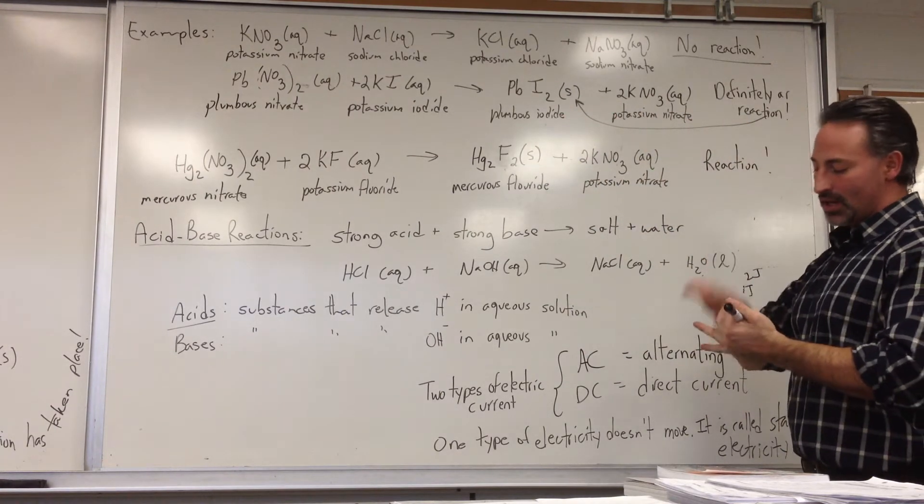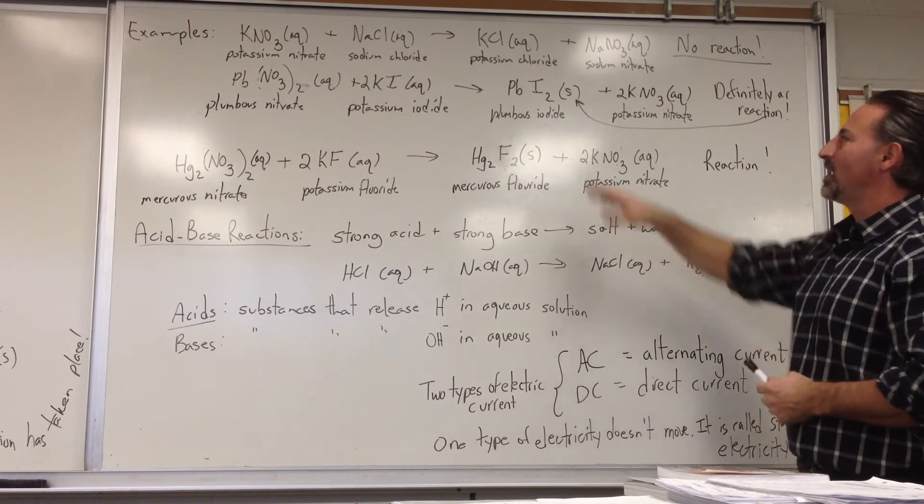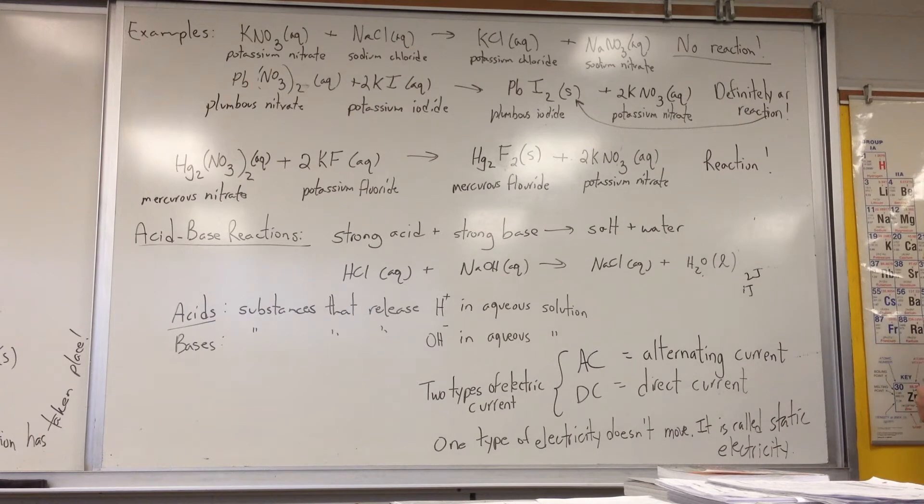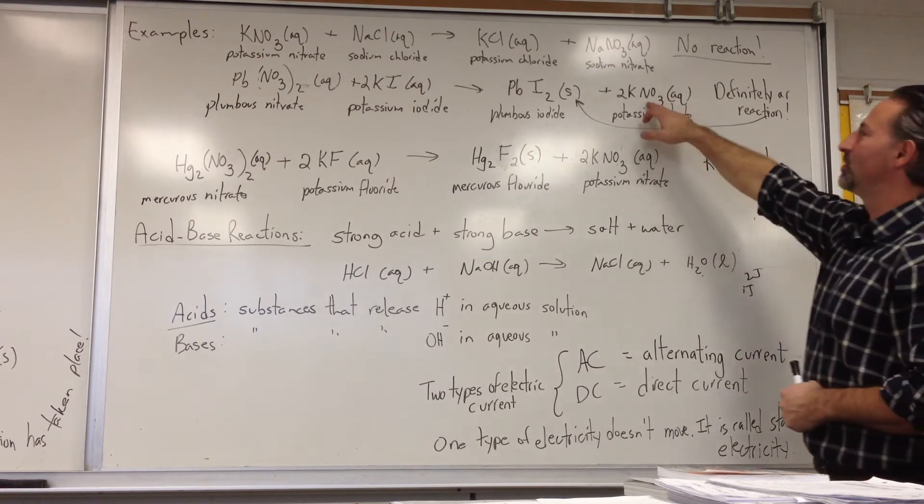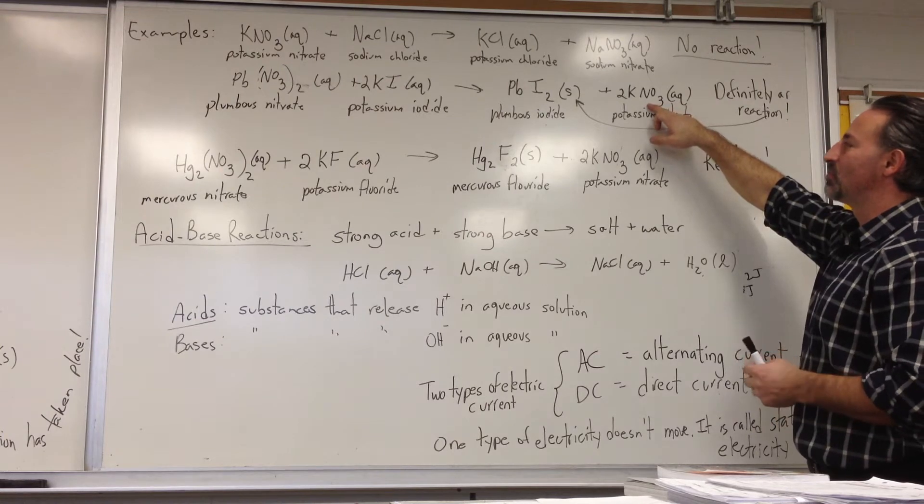You have a change of color, a change of temperature, or an evolution of gas. In this case, we get a solid forming that has a yellow color to it. This part still remains an aqueous solution. The potassium nitrate doesn't form a precipitate. It actually stays dissolved in the water.